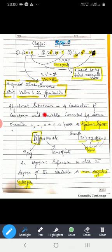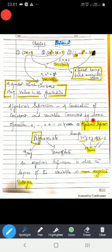So what are algebraic expressions? Algebraic expressions are a combination of constants and variables, connected by some mathematical operations like plus, minus, multiplication, and division. These are called algebraic expressions.